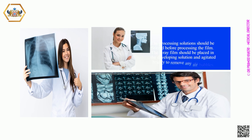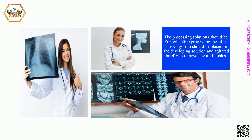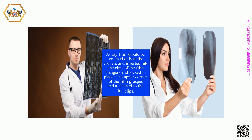The processing solutions should be stirred before processing the film. The X-ray film should be placed in the developing solution and agitated briefly to remove any air bubbles. The X-ray film should be grasped only at the corners and inserted into the clips of the film hangers and locked in place. The upper corner of the film is grasped and agitated to the top clips.